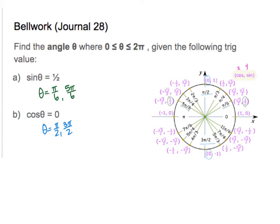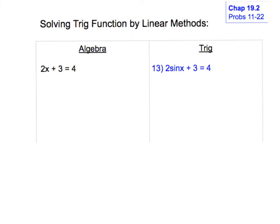We've solved for theta by using the unit circle, figuring out what value crops up on the coordinate system, and correlating that to the corresponding angle. Sometimes you have more than one place where this value shows up, so make sure you look at the entire unit circle. Now let's get into solving trig functions — finding the angle that makes the expression or equation true.